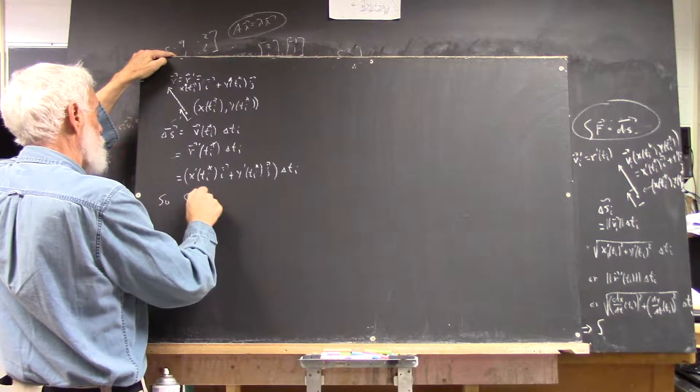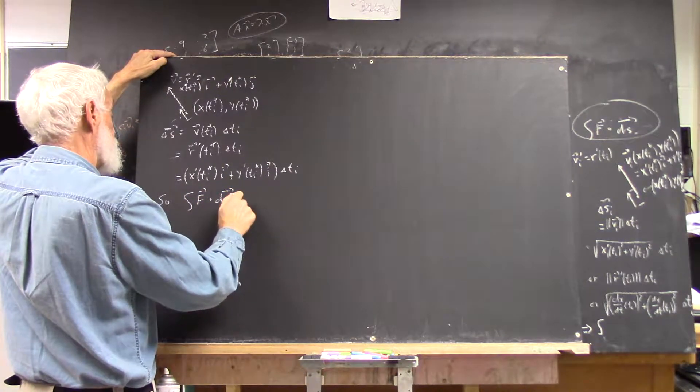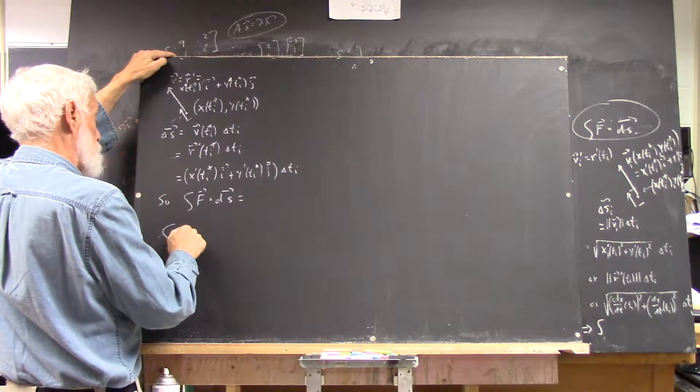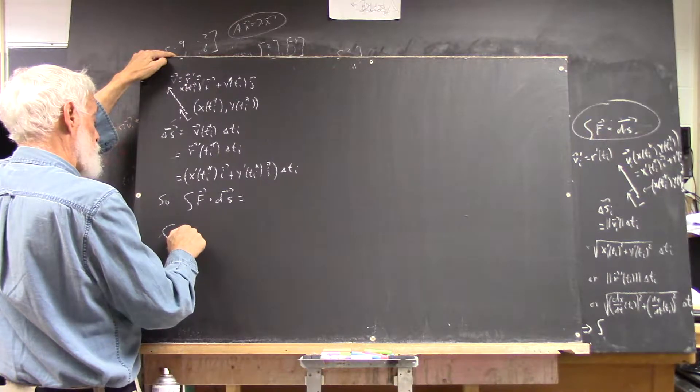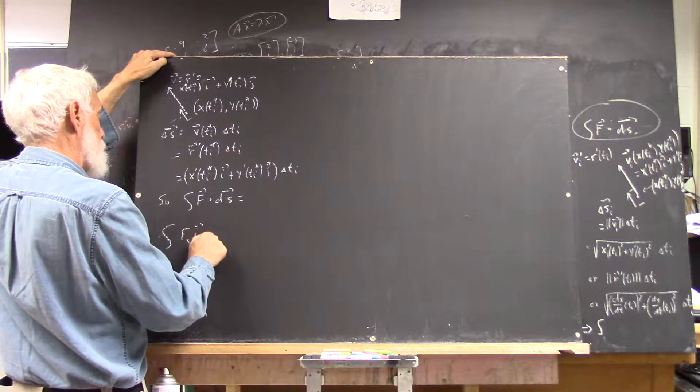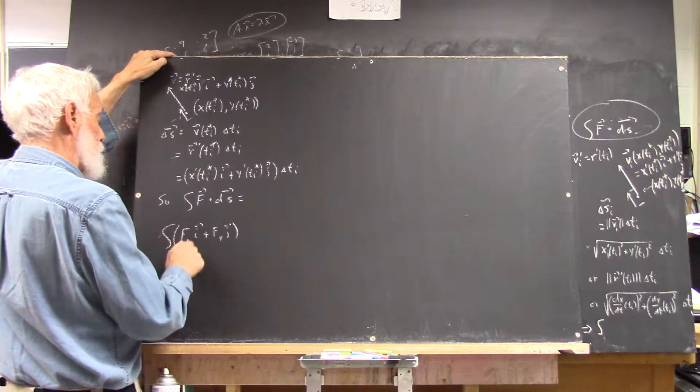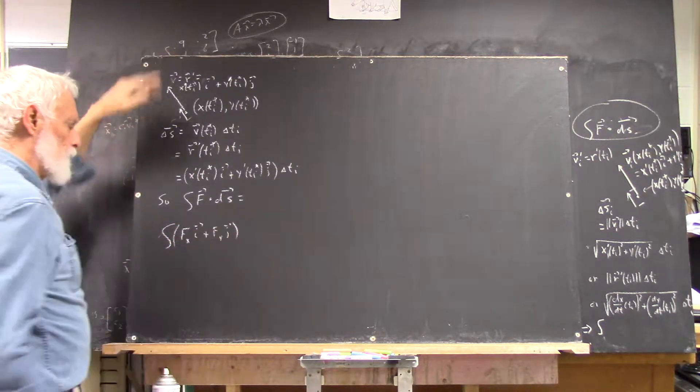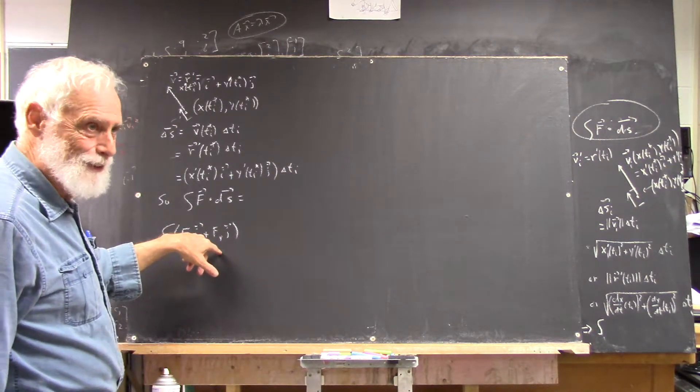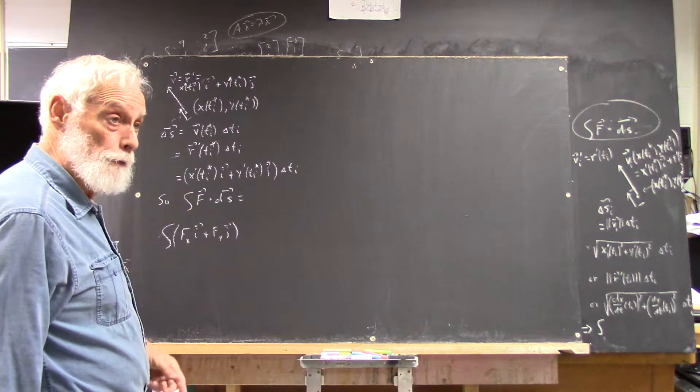So the integral of f dot ds is the integral of, call it f sub x i plus f sub y j. Notations are a little ambiguous. That doesn't mean the x derivative and the y derivative, because that's just another notation. But it's the x and the y components of your f vector.